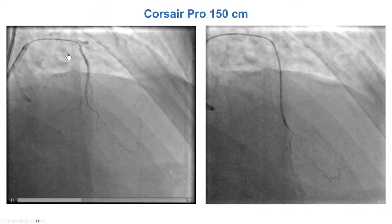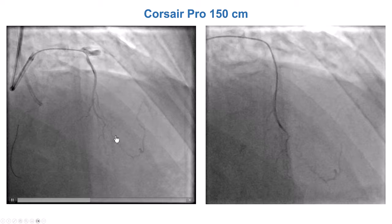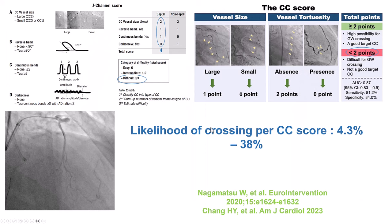A Corsair microcatheter was advanced into this large septal. We can see the connection — it is a fairly small and highly tortuous collateral. We used different scores to assess the difficulty of crossing this collateral: the J-channel score and the CC score (collateral channel score) from Taiwan. The CC score considers vessel size — large scores one, small scores zero — and tortuosity. No tortuosity gives two points; tortuosity gives zero. The J-channel score looks at size, reverse bend, continuous bend, and corkscrew morphology. In our case it was four, meaning the likelihood of success was low, so we knew this collateral was a challenging one.